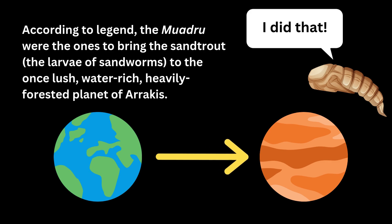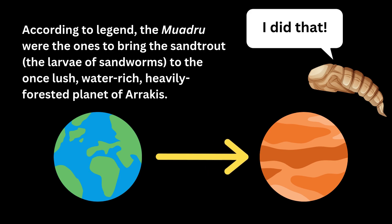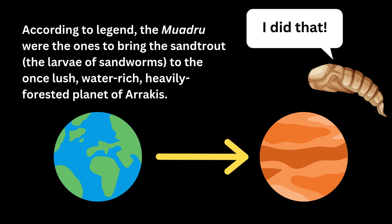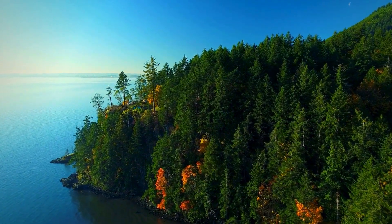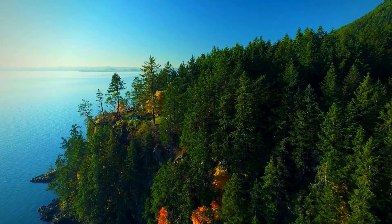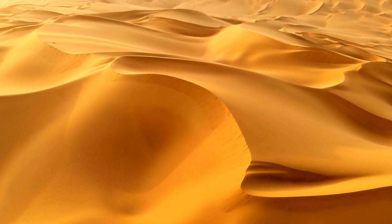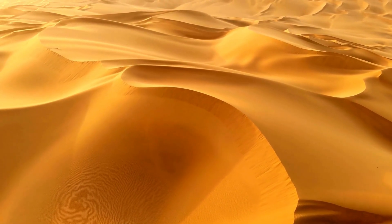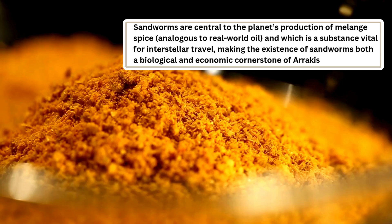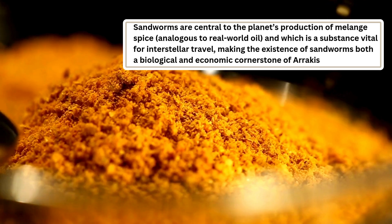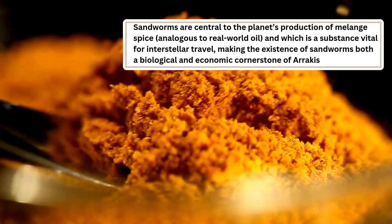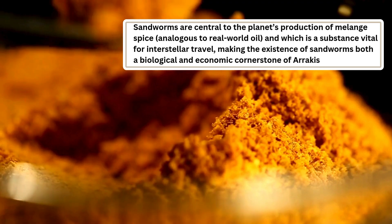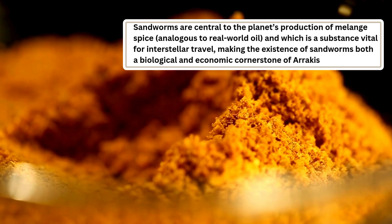According to legend, the muadru were the ones to have brought sand trout — that is, the larvae of sandworms — to the once lush, water-rich, heavily forested planet of Arrakis. Think of pre-sandworm Arrakis as the Pacific Northwest of the United States, and began its desertification to become what it is now well known for. The sandworms are central to the planet's production of spice melange, analogous to real-world oil, and which is a substance vital for interstellar travel, making the existence of sandworms both a biological and economic cornerstone of Arrakis.